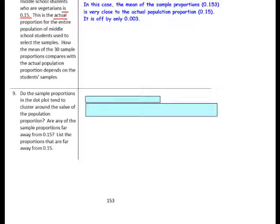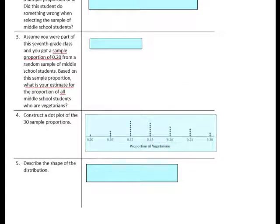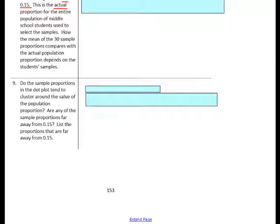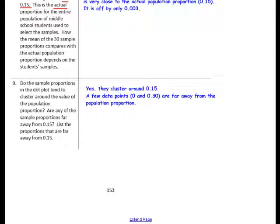Question 9: Do the sample proportions in the dot plot tend to cluster around the value of the population proportion? Yes, they cluster around 0.15. Are any of the sample proportions far away from 0.15? Looking at the dot plot, a few data points — 0 and 0.30 — are far away from the population proportion.